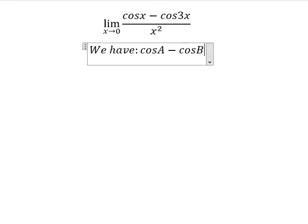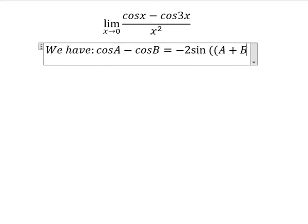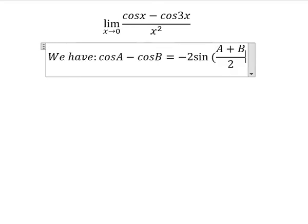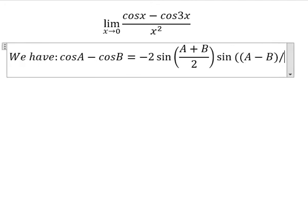Cosine A minus cosine B equals negative 2, sine of A plus B over 2, and sine of A minus B over 2.